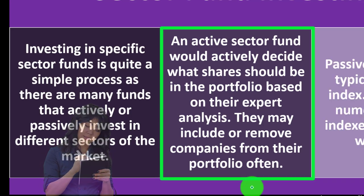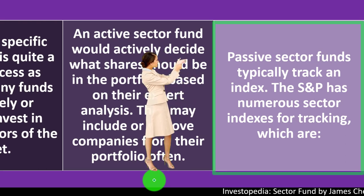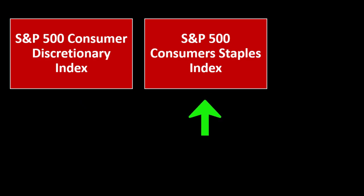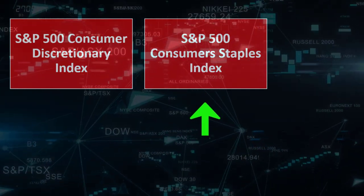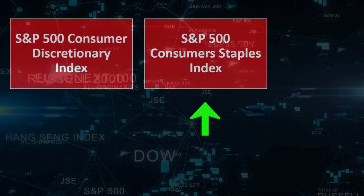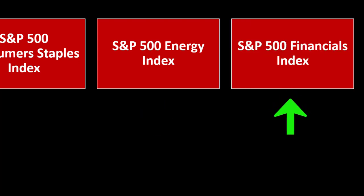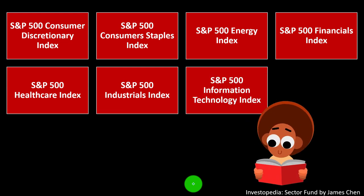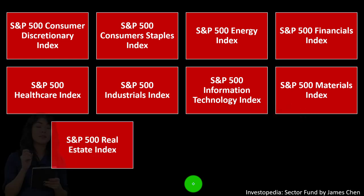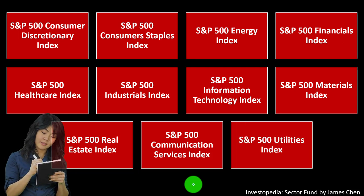Passive sector funds typically track an index. The S&P has numerous sector indexes including the S&P 500 Consumer Discretionary Index, S&P 500 Consumer Staples Index, S&P 500 Energy Index, S&P 500 Financials Index, S&P 500 Healthcare Index, S&P 500 Industrials Index, S&P 500 Information Technology Index, S&P 500 Materials Index, S&P 500 Real Estate Index, S&P 500 Commercial Services Index, and S&P 500 Utilities Index. You can often find mutual funds or ETFs tied to these averages.